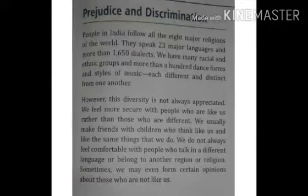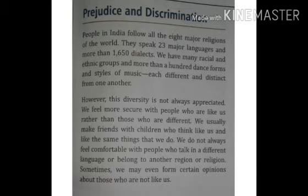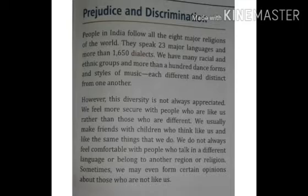In this lesson, the first topic we are going to talk about is prejudice and discrimination. Children, you should know that in India there are 8 major religions, and people speak 23 major languages. Accordingly, there are 1,650 dialects. Besides that, there are so many castes and races, hundreds of dance forms, and different types of music. These are all different from each other.